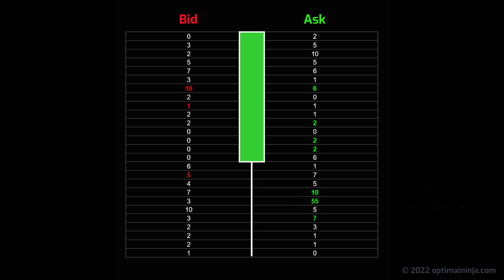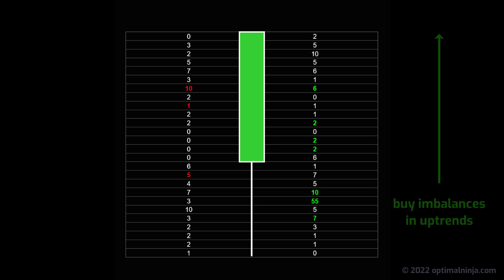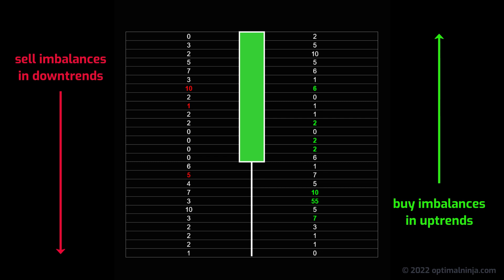By now, you might be wondering how this information is useful. The point is this: because imbalances are a measure of aggression, they are an excellent method of tracking market sentiment. Ideally, we want to see buying imbalances at the start of and during uptrends, and selling imbalances at the start of and during downtrends. And because the levels themselves can show high degrees of market participation, they can act as support and resistance. Later, we will be focusing on specific trading setups, but firstly let's take a look at the unique features of Optimal Imbalance.